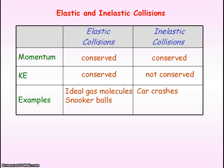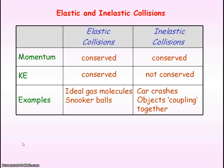Another example of an inelastic collision is when a bullet embeds itself into an object — that also requires energy, so kinetic energy is not conserved. Another example is when objects couple together and come together as one object; that also requires energy, so kinetic energy is not conserved. To determine whether a collision is elastic or inelastic, you need to calculate whether the total kinetic energy before the collision equals the total kinetic energy after.